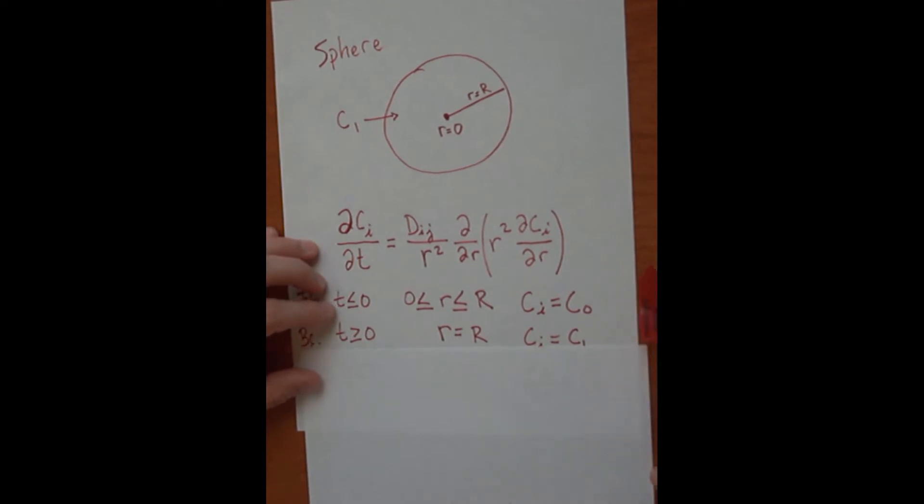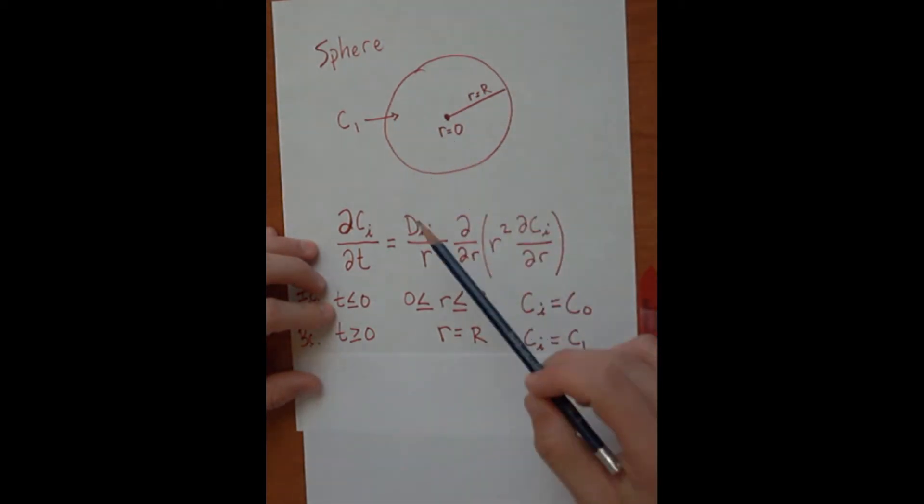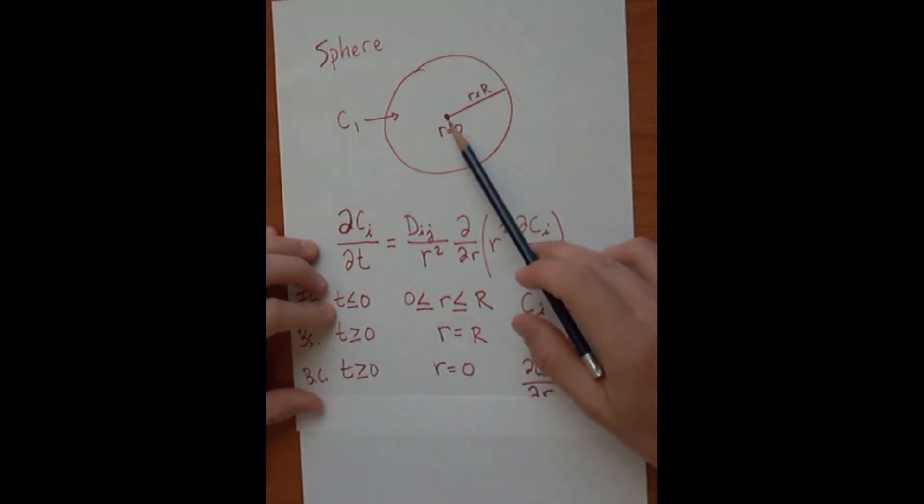For any times greater than zero, the two boundaries that we're going to look at will be the surface of the sphere, which is going to be at R equals capital R, and at this point right here surrounding the sphere at the surface, the concentration will always be equal to C1. The other boundary will be at the center of the sphere, so it's R equals zero.